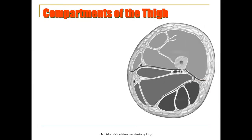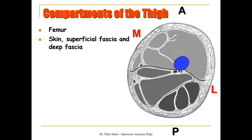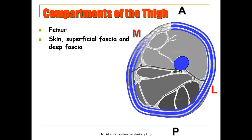If we talk about the different regions of the lower limb, we start first with the thigh. In this cross section of the thigh, we can notice the presence of the femur. For our orientation, this is the anterior, posterior, lateral, and medial sides of the thigh. You can see that the thigh has three outer coverings: the skin, superficial fascia, and deep fascia.